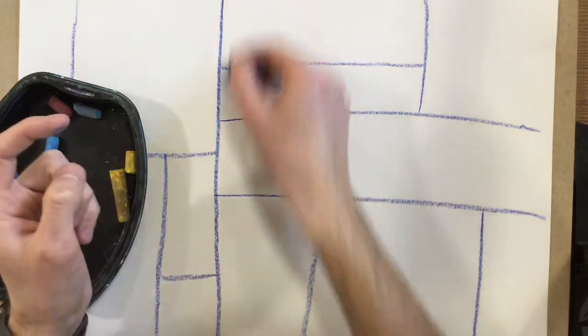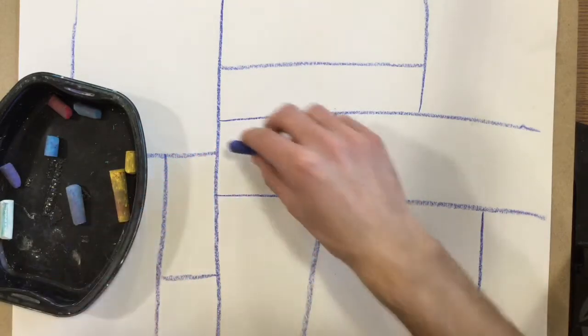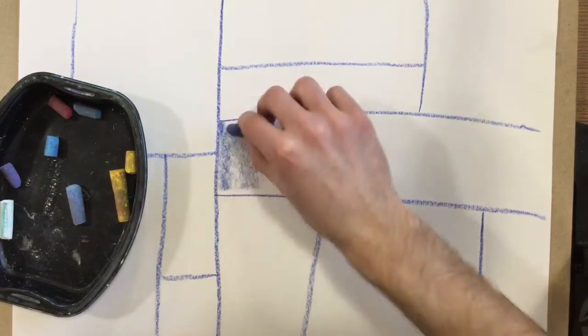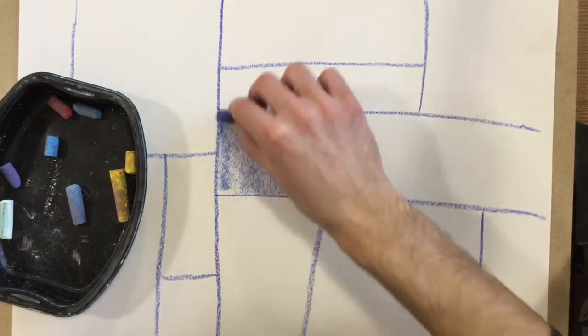I use the tip to draw those lines, but when I go to color them, I'm going to use the side. So you need to carefully color in some of those shapes.